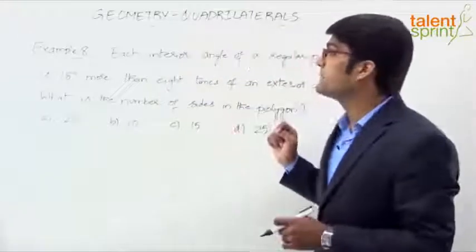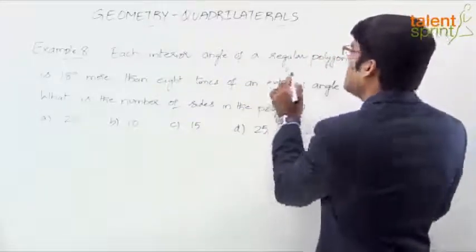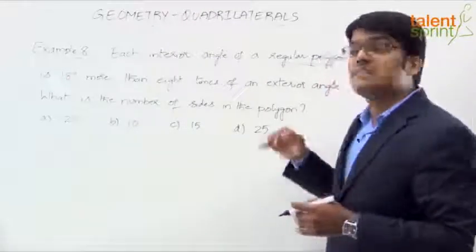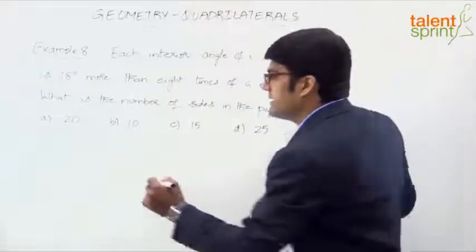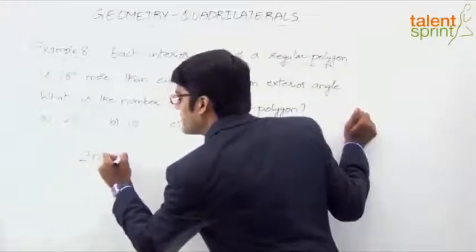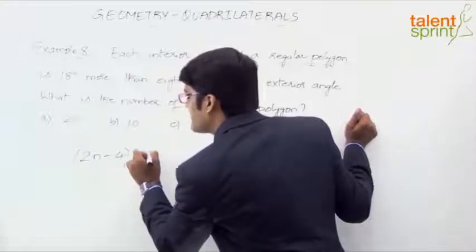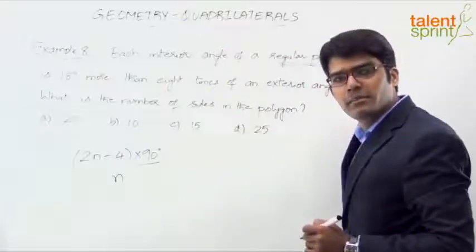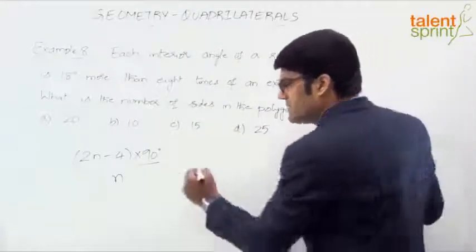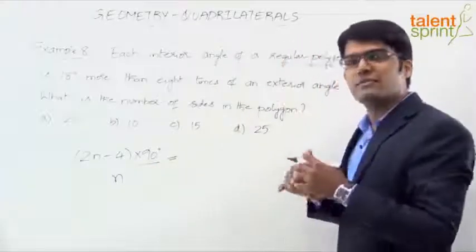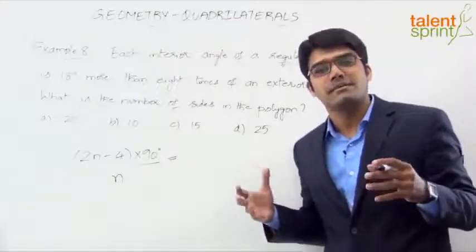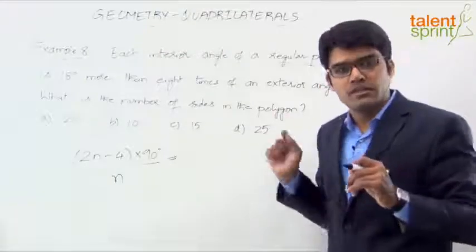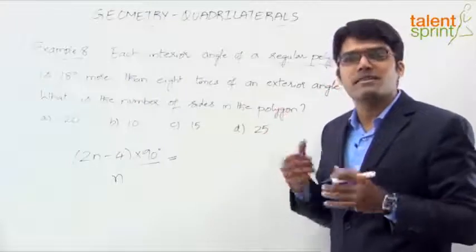Now let us look at this problem. Each interior angle of a regular polygon — where each side and each angle are equal — equals (2n−4) × 90 divided by n. Since this is formula-based, you just have to write the proper equation based on the given question statement and simplify to get the answer.